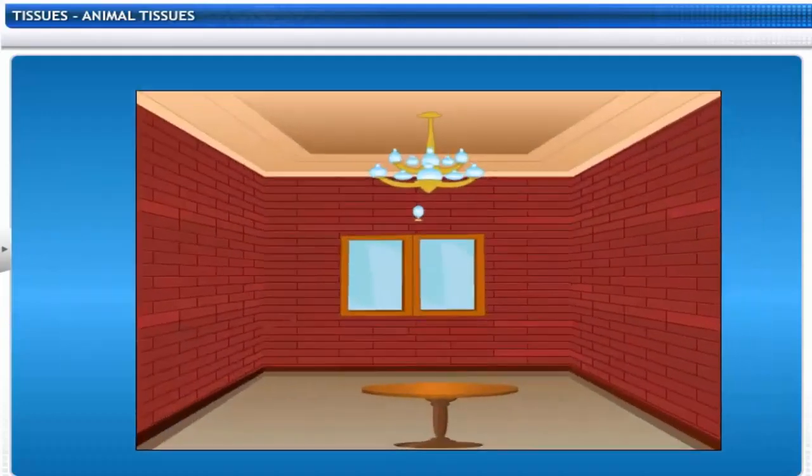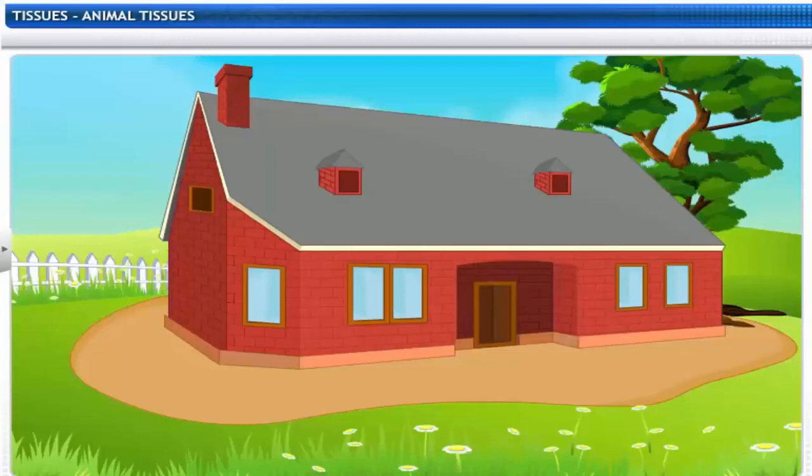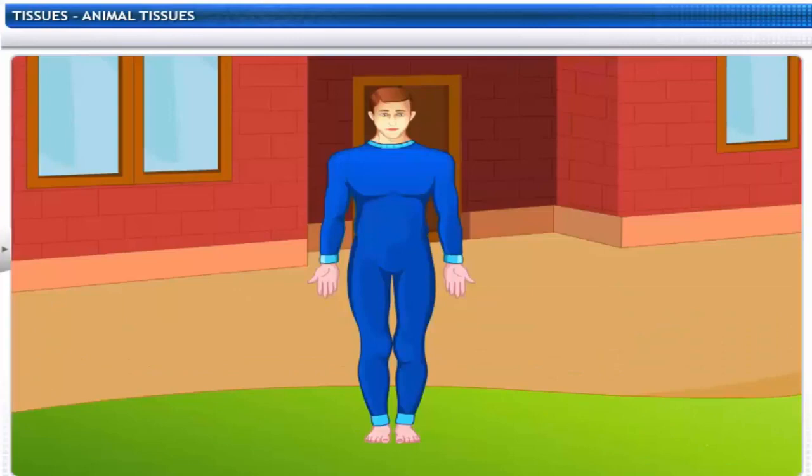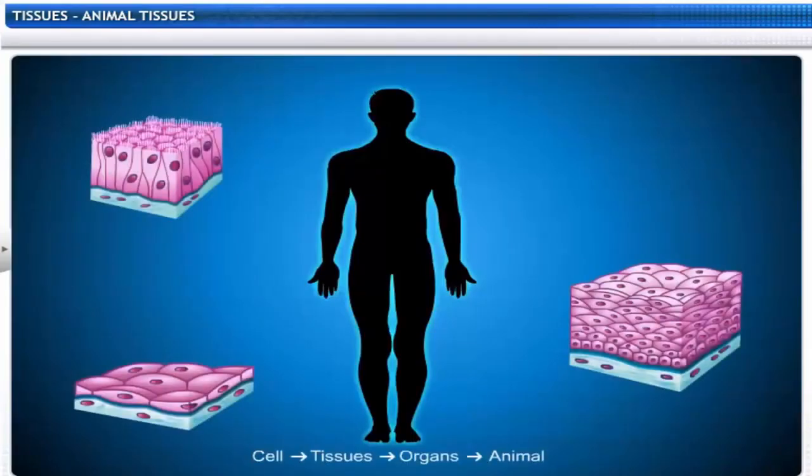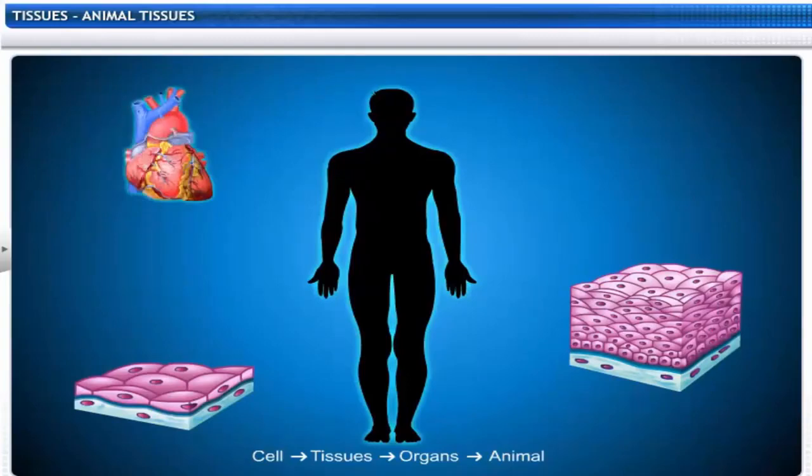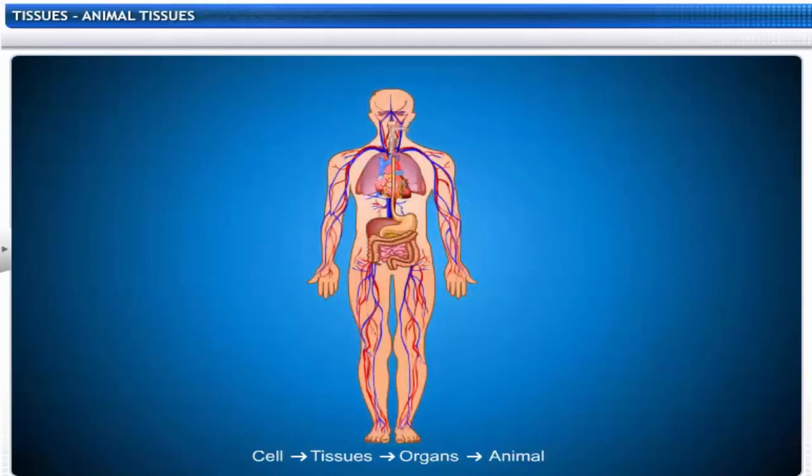It takes a small brick to form a wall. It takes four walls to form a room and many rooms to form a house. Similarly, it takes tiny cells to form a tissue. It takes different tissues to form an organ and many organs to form an organism.